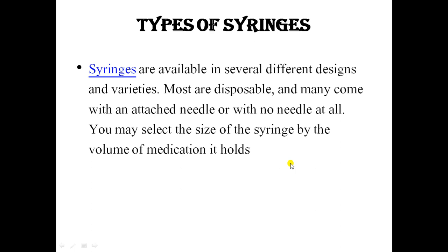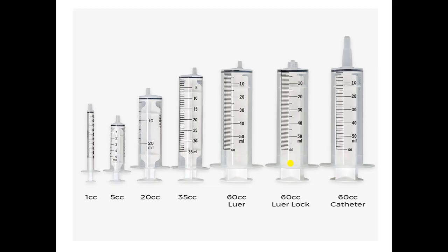Syringes are available in several different designs and varieties. Most are disposable and many come with an attached needle or with no needle at all. You may select the size of syringe based on the volume of medication it holds. Common types include 1 cc, 5 cc, 20 cc, 35 cc, 60 cc luer lock, 60 cc luer slip, and 60 cc catheter tip. The syringe used depends on the medication.